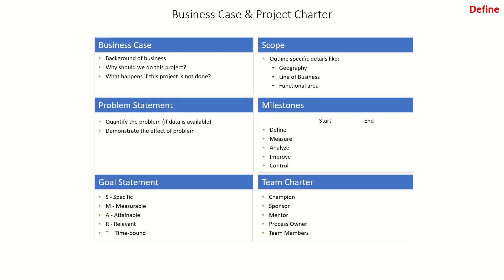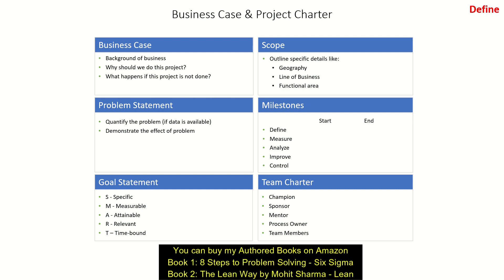We will learn DMAIC methodology here as well. The first phase is Define. In the Define phase, the team has to create a business case and a project charter. There are six elements of a project charter: business case, problem statement, goal statement, scope of the project, milestones, and team charter. The first thing the team has to do is create a project charter. In the business case, we put down the business background, why we want to do this project, and what happens if we don't — the losses being incurred should be mentioned in the business case.